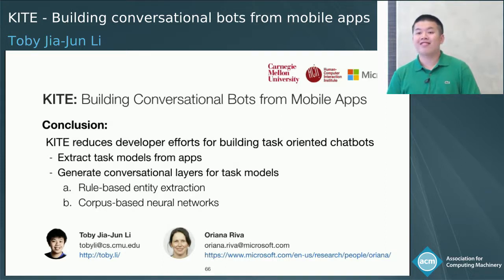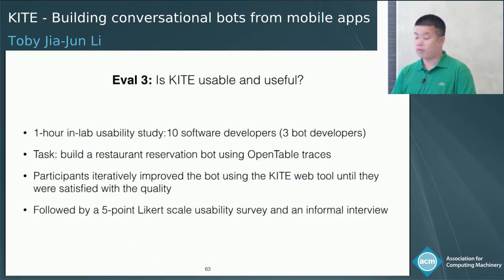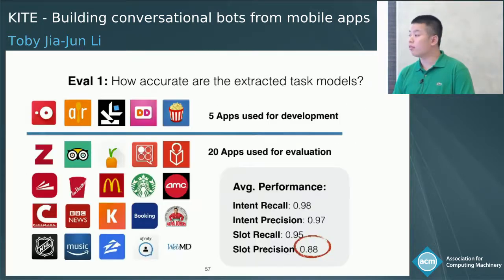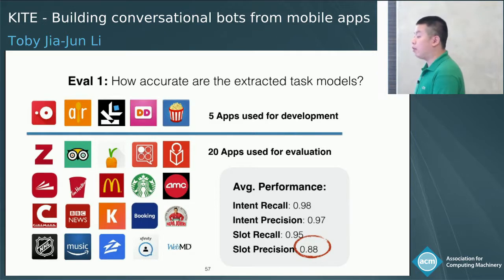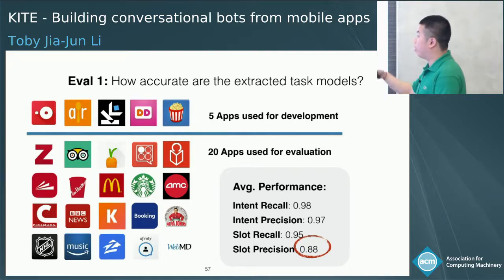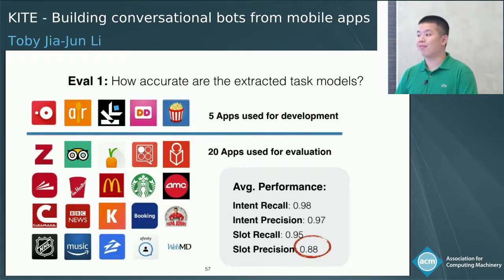Question from audience: Going back to the evaluation slide — you said you use five apps to train. Did you try to change those five and see if results change depending on which ones you use? Response: We did not, because we used those five apps as a development set to manually debug our process of task extraction, intent extraction, and slot extraction. That was the reason why we did not switch between the development set and the test set. We basically used those five apps to ensure the correctness of our method before applying the model on the remaining 20 apps. Thank you very much.